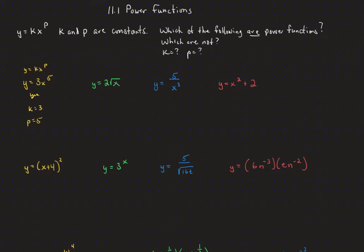On the second one, we want to see the square root of x as being x to the one-half power. So this is a power function, yes, and the k — the coefficient — is 2, and the p — the exponent — is one-half.